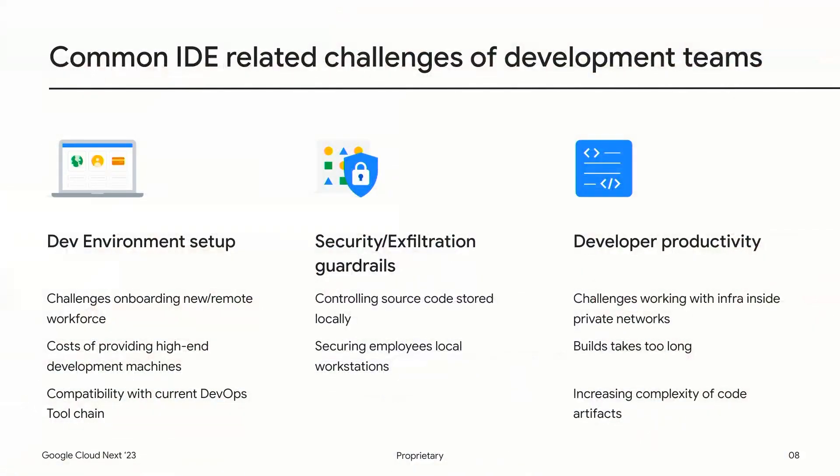The second problem is security and exfiltration prevention. The moment you have your code and data living on a local machine, you're by design increasing your potential attack surface. Moving code and data to a cloud-based work environment minimizes that attack surface and opens up security controls like VPC Service Controls and BeyondCorp Enterprise. The third is developer productivity — it's hard to find a balance between velocity and security, but Workstations finds that sweet spot with pre-configured environments, organization security policies, and higher-velocity network access for handling artifacts.